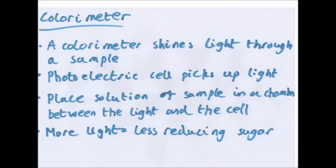And finally, the quantitative test: a colorimeter. A colorimeter shines light through a sample, and a photoelectric cell on the other side picks up the light, so you can measure transmission or absorption — we'll be looking at absorption. You place a solution of the sample in a chamber between the light and the cell. The more light that gets through, the less reducing sugar there is. More reducing sugar means more colour change, more cloudy, and less light gets through — more is absorbed.